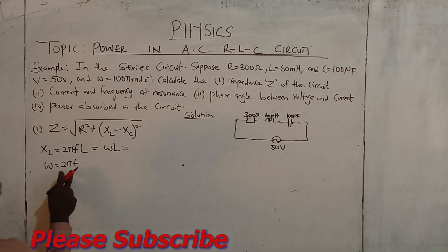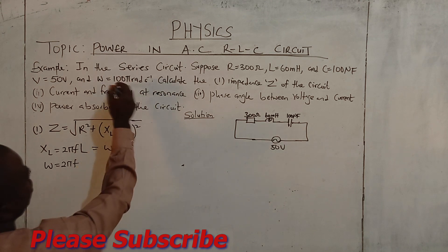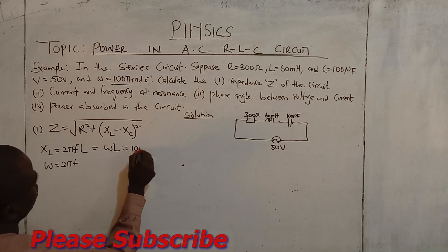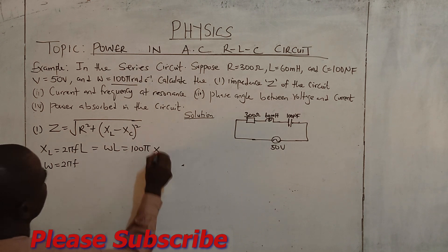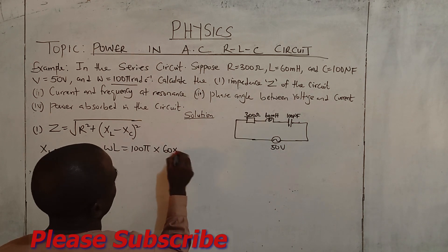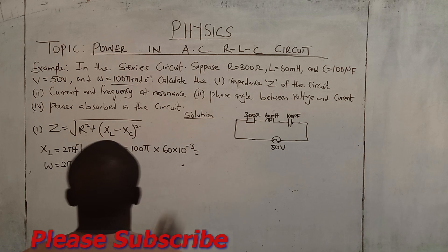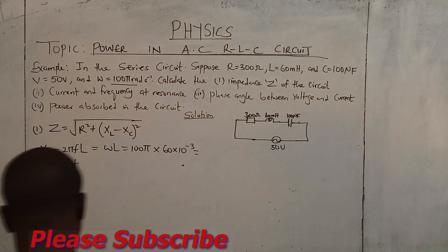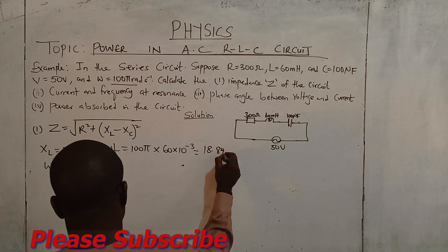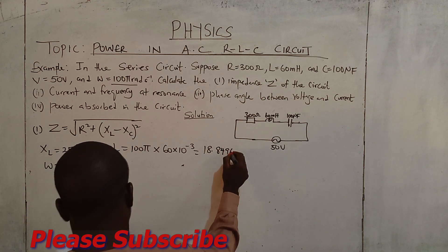Since you are not giving frequency, but you are giving the whole together, now you write 100π times inductor 60 times 10 to the power minus 3. We have 18.8496 ohms.